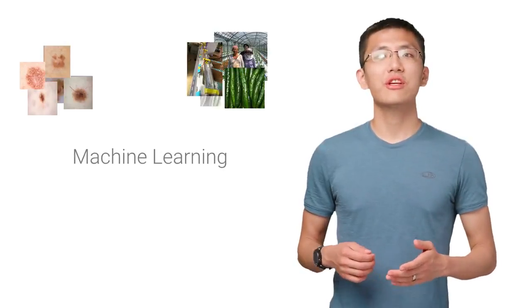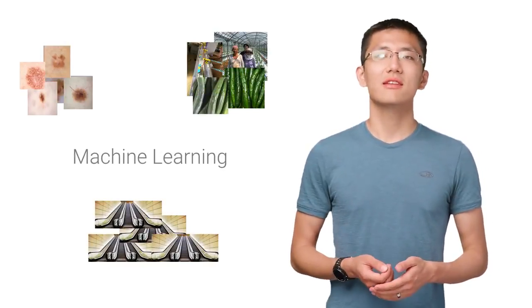From detecting skin cancer to sorting cucumbers to detecting escalators in need of repair, machine learning has granted computer systems entirely new abilities. But how does it really work under the hood? Let's walk through a basic example and use it as an excuse to talk about the process of getting answers from your data using machine learning.